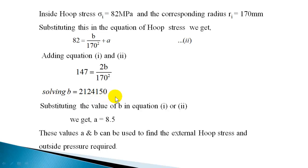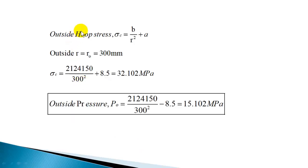B equals 2,124,150. Substituting this value of B into either equation, you can solve for A, which gives A = 8.5. These are the values of A and B. Once you have A and B, you can find the hoop stress or radial pressure at any radius R. Inside hoop stress is already known as 82 MPa. Outside hoop stress can be calculated using B/R² + A when R equals the outside radius of 300 mm, which gives 32.102 MPa.